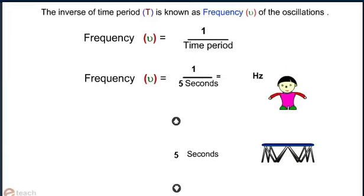The inverse of time period T is known as frequency ν of the oscillation. That is, frequency ν equals 1 over time period. In this activity, you can vary the time period and you will get the corresponding frequency.